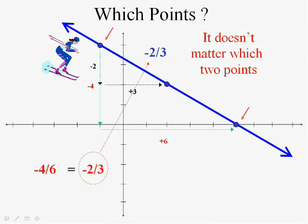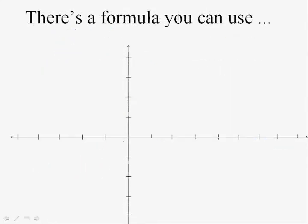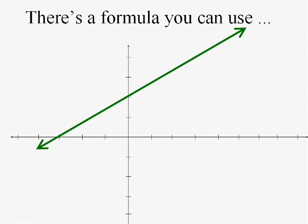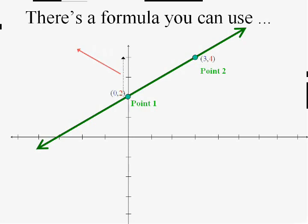It's kind of a pain to draw these pictures, so there's going to be a formula you can use if I just give you the two points. Let's look at this line with point one as zero-two and point two as three-four. The rise — the amount we went up — is two. Where did that two come from? Couldn't you say it came from the y part of the second point minus the y part of the first point, or in this case four minus two?